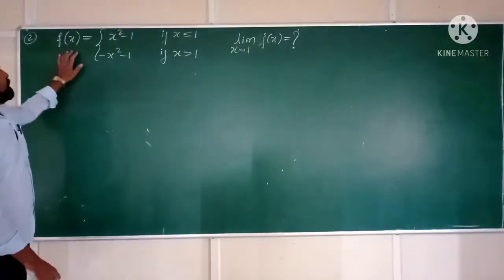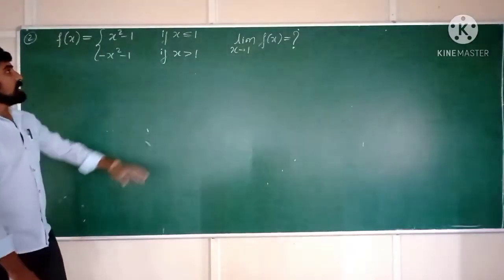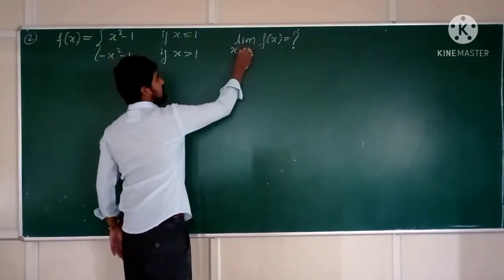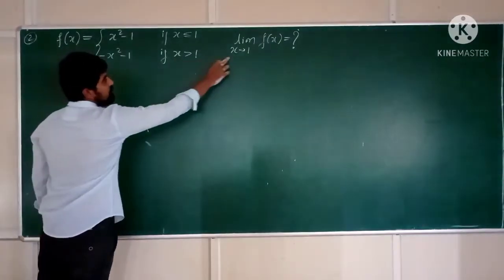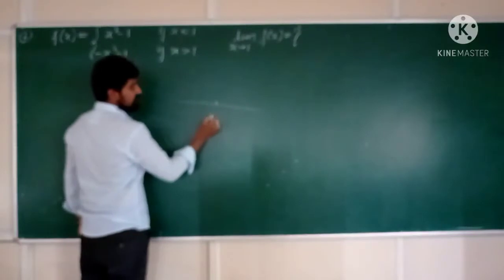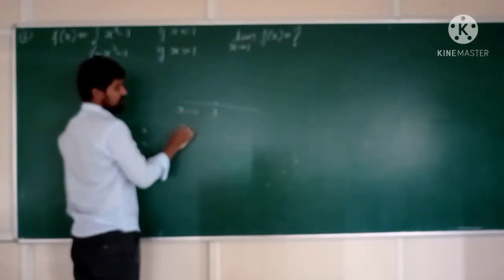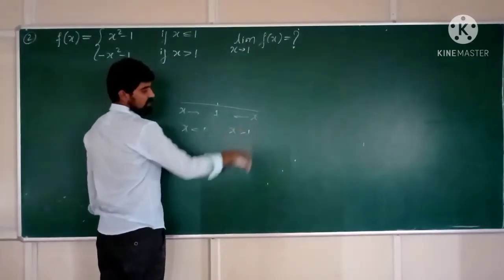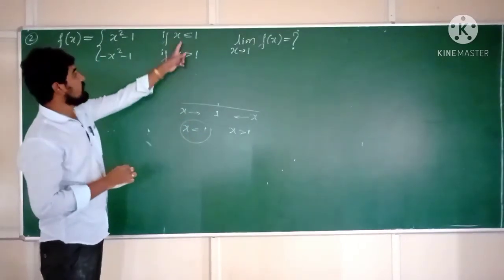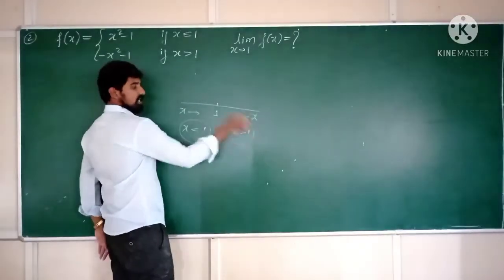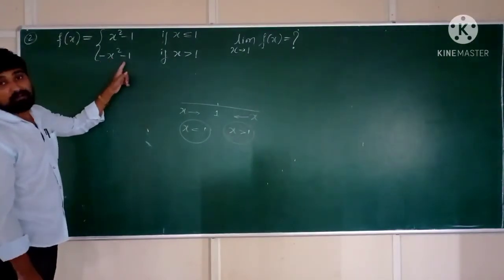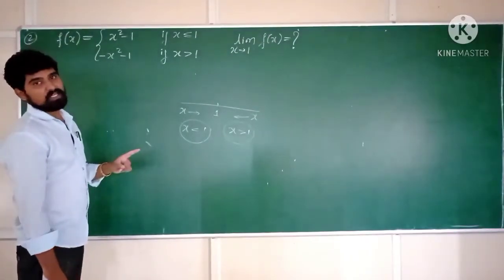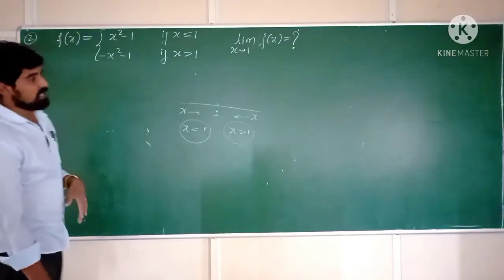Now the second question: F(x) = x²−1 if x ≤ 1, and F(x) = −x²−1 if x > 1. Evaluate limit x tends to 1 of F(x). Here x is approaching to point 1. If x is approaching from its left side, x is less than 1, so the definition of F(x) is x²−1. Since at x = 1 the function is defined in two values, we need to find LHL and RHL.